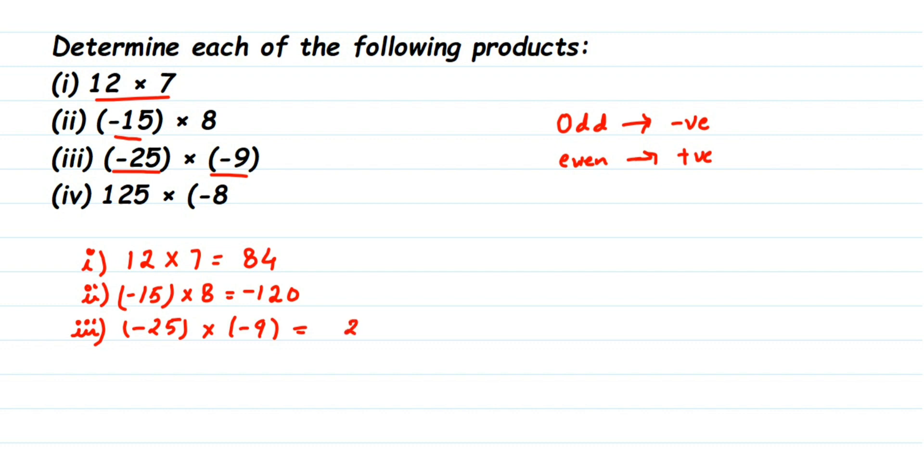Now we are going to check for the signs. Now we have here two negative signs, 1 and 2. 2 is an even number. So the final answer will be positive. So you don't have to put sign. If you want to put, you can put plus sign or just leave it. The answer is 225.